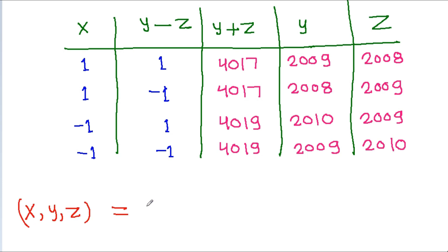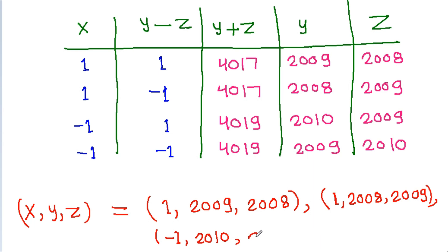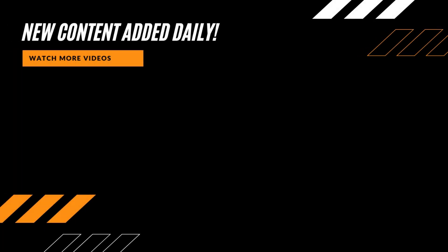So the four solutions (x, y, z) are: (1, 2009, 2008), (1, 2008, 2009), (-1, 2010, 2009), and (-1, 2009, 2010). These are all four integer solutions to the given system.